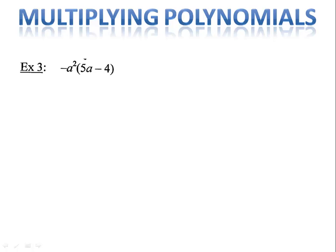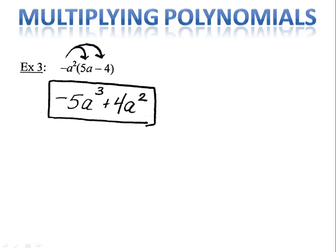Example 3 is very similar — we use the distributive property, but this time we are also distributing a negative. Negative a squared times 5a is negative 5a to the third. Negative a squared times negative 4 is positive 4a squared. So when I expand the expression, I have negative 5a to the third plus 4a squared.